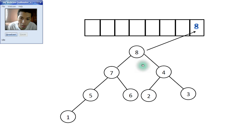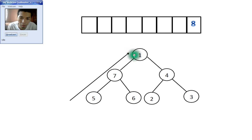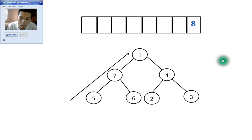Since 8 is greater than all other nodes, and 7 is greater than all nodes beneath it, and 4 is greater than all of those nodes, 8 will now be placed at the top of the stack and removed. The next step is shifting 1 — which is at the leftmost bottom of the tree — to the top to replace 8, since 8 has been removed.